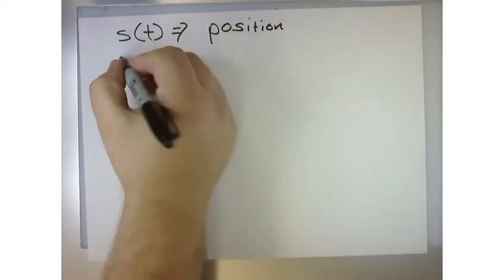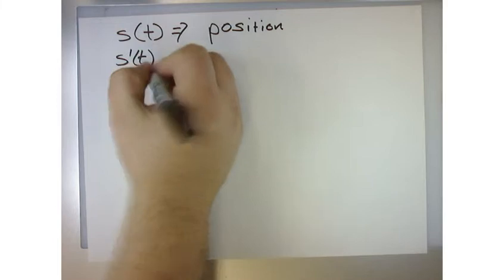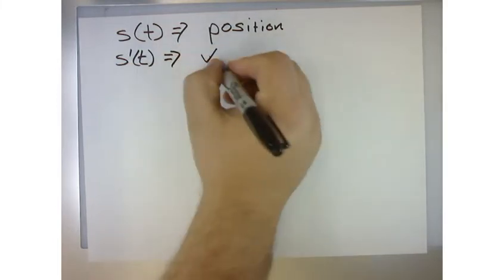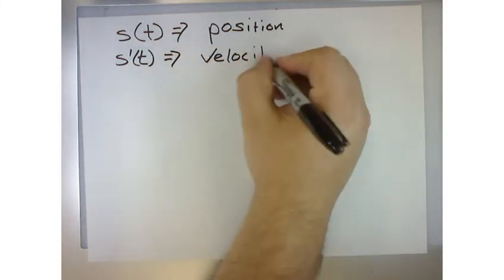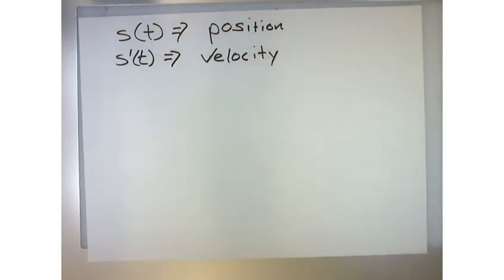Then we've discovered that s prime of t is the velocity, right? So that's where all this calculus business comes from. Newton wanted to study the rate of change of the rate of change with regards to gravity and acceleration.